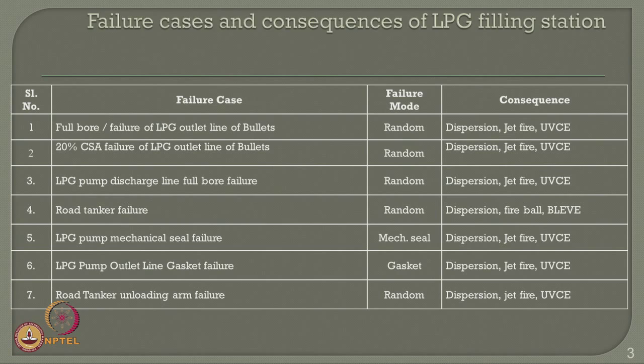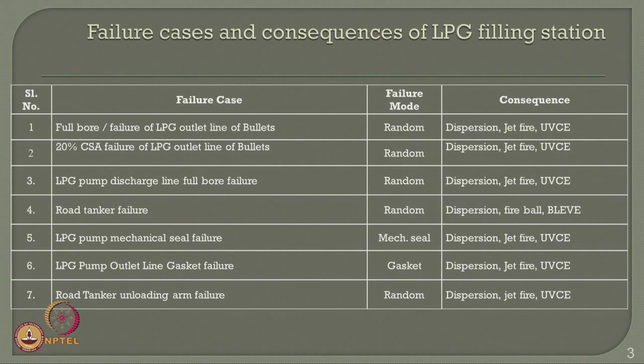For doing any risk assessment or consequence modeling, the first step — and the most difficult step — is identifying the failure cases and the corresponding consequences of a given study. The table shown in the slide is the list of possible failure cases and the corresponding consequences of an LPG filling station. This table has been prepared after detailed site inspection and in consultation with the HAZOP team and plant managers involved in safety and risk assessment of these two plants.